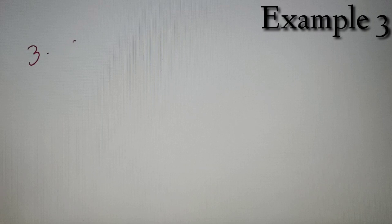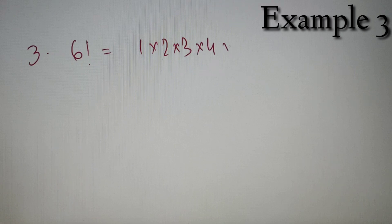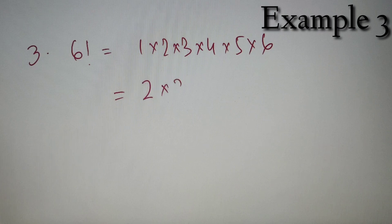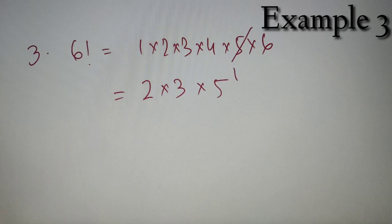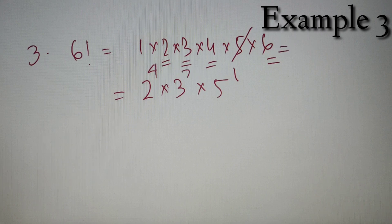For our third example, we have to find the Euler's Totient value of 6!. Now 6! = 1 × 2 × 3 × 4 × 5 × 6. The prime numbers involved are 2, 3, and 5. Checking the powers: 5 appears only once so we get 5¹; 2 appears in 2, 4, and 6 giving 2⁴; and 3 appears in 3 and 6 giving 3². So the prime factorization of 6! is 2⁴ × 3² × 5¹.